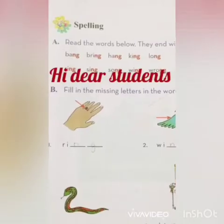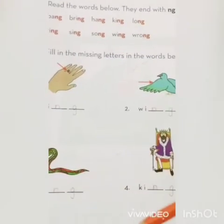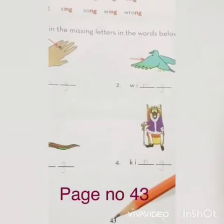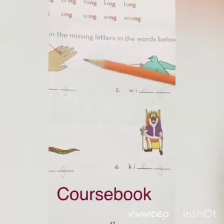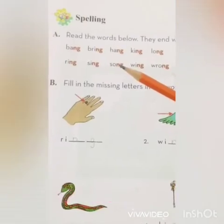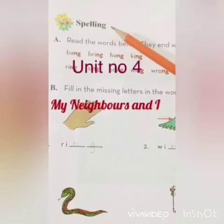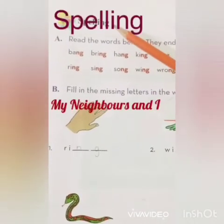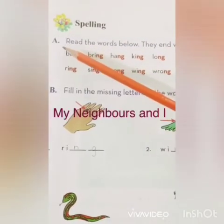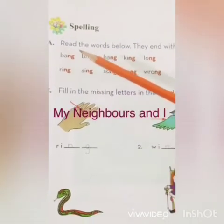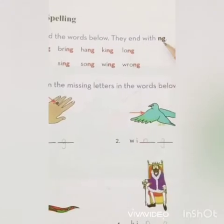Thank you, dear students. Now let's move on to page 43 of the course book English A, My Unit number four: My Neighbors and I. The topic is spelling. Now I'm going to read the statement of Part A: read the words below that end with ng.